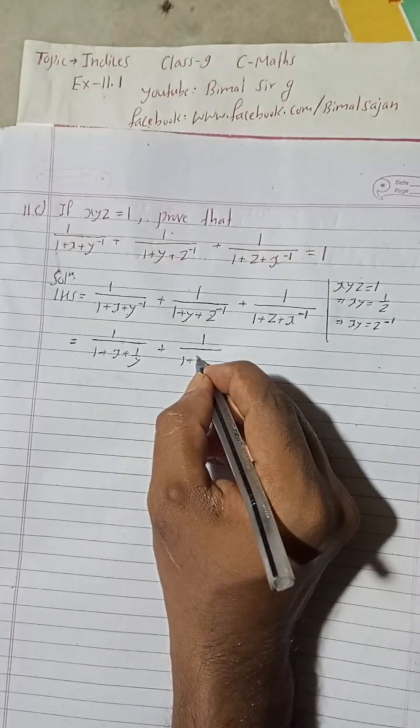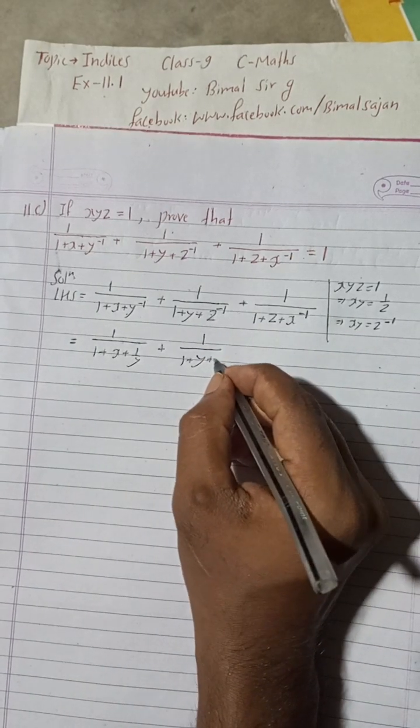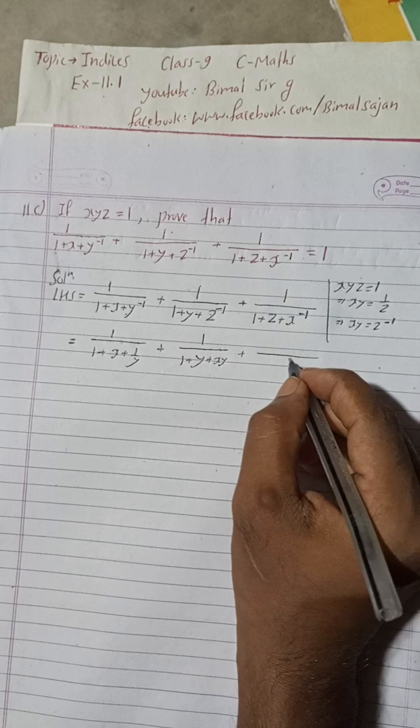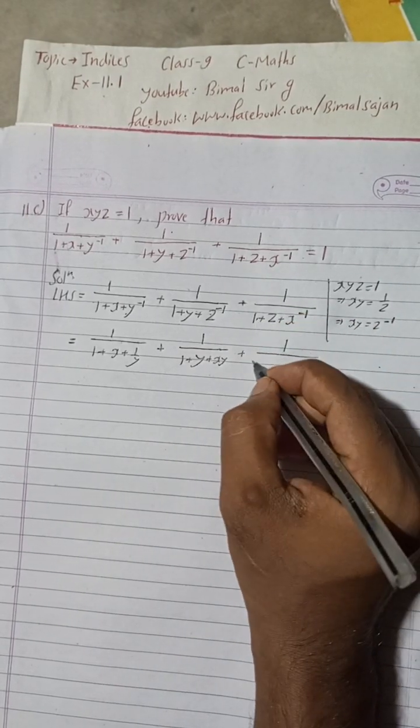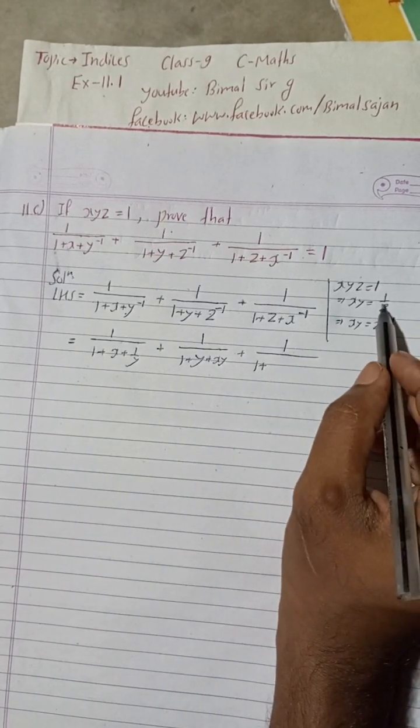Then plus 1/(1+y+z^(-1)), which means z to the power minus 1, so plus xy. Plus now here is 1/(1+z^(-1)+x^(-1)).